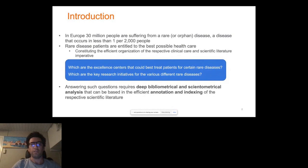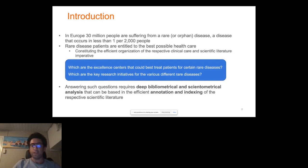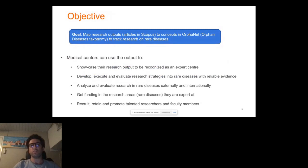Rare disease patients are entitled to the best possible care, but finding the best possible care needs answering some questions — for example, what are the excellent centers that could best treat patients for certain rare diseases, or what are the key research initiatives around different rare diseases and who is doing them. One way to answer such questions is doing some deep bibliometrical analysis to see different research outputs in terms of publications around different rare diseases, to see who is the most active institute or research center around a particular rare disease.